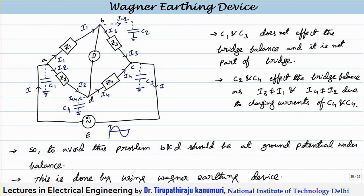The effect of C2 and C4 is that I3 will not be equal to I1 and I4 will not be equal to I2, due to the charging current of C2 and C4. So they are going to affect the bridge balance. In order to overcome the problem of these capacitive currents Ic2 and Ic4, so that I3 equals I1 and I4 equals I2, we need to either design the circuit such that these capacitances are not formed, or maintain proper insulation between ground and these points. The second option is: if the potential difference between ground and point B is equal to 0, then the capacitor current Ic2 cannot pass. This current is due to Vb × ω × C2, and similarly Ic4 is due to Vd × ω × C4.